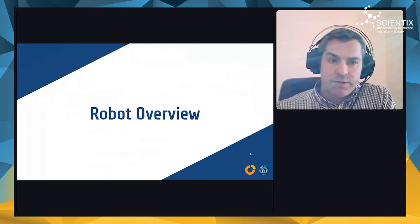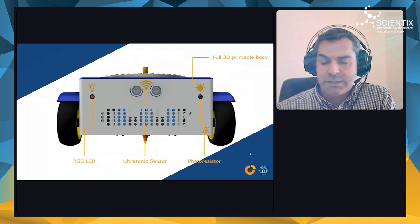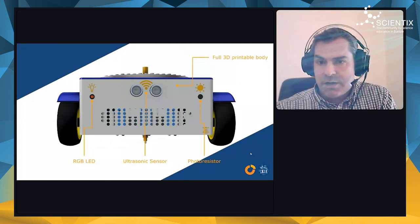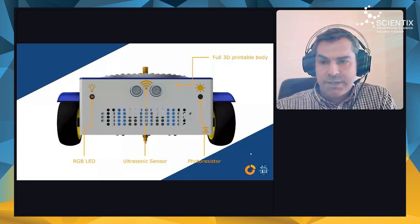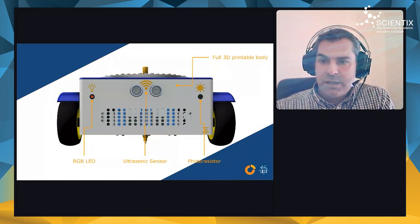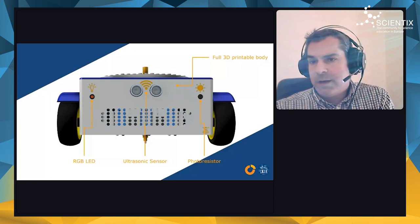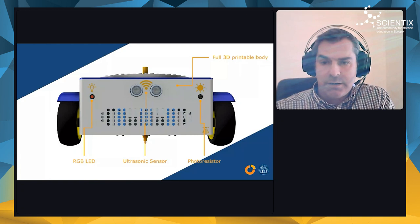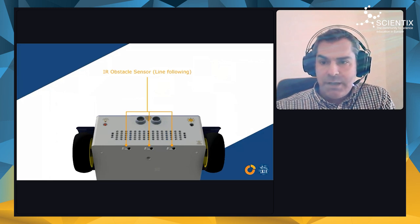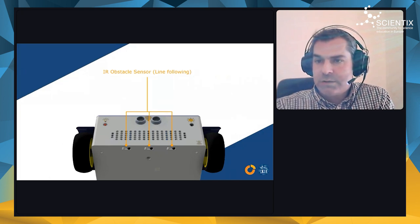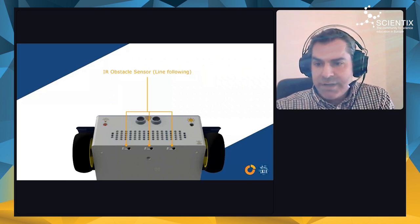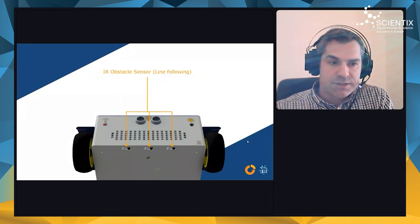Let's start with an overview of the robot. The robot has in the front surface an RGB LED, two ultrasonic sensors, and a photo resistor. All the parts of the main body are 3D printable except for the wheels. If we look at the bottom side, it has three infrared obstacle sensors which are used for designing line following experiments and other activities related to sensing the surface it is moving on.